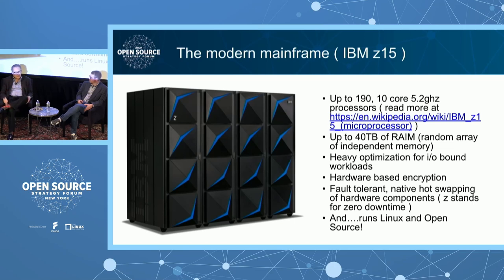The specs on screen show it has the fastest microprocessor in the business, and 190 of them — and that's only for the applications. It doesn't count the I/O processors, which are several hundred, and other specialty processors so the application processors don't get overburdened with anything other than running the actual applications.